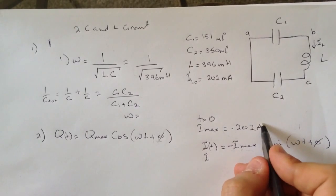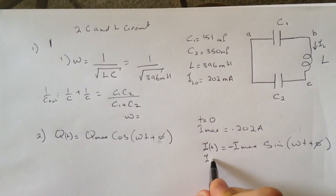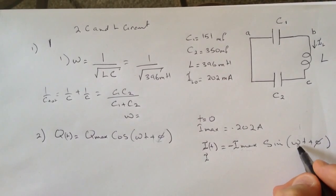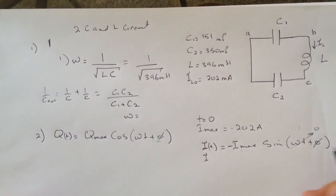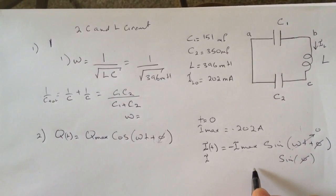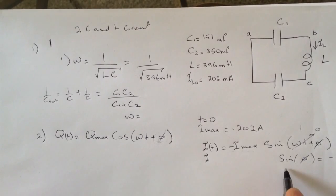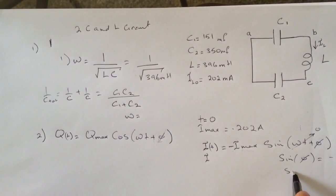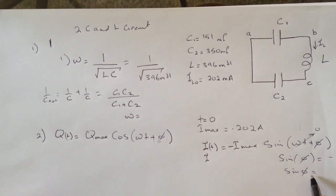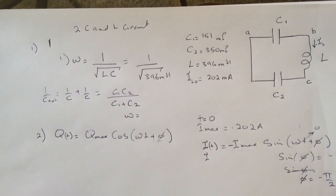Since t equals zero, this is going to be zero, so sine phi - we need this to be minus one. We need sine phi to be negative one, so phi needs to be minus pi over two. This is phi.